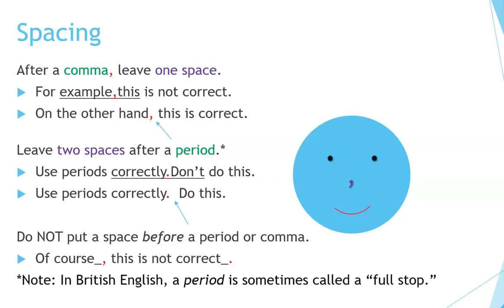For example, 'Use periods correctly' — don't write the next sentence without spacing. 'Use periods correctly. [space][space] Do this.' Two spaces after the period is correct.